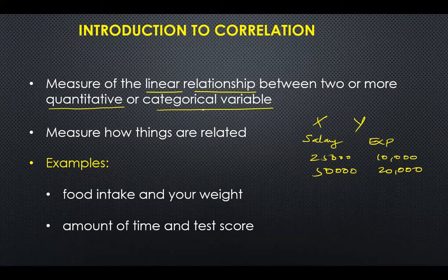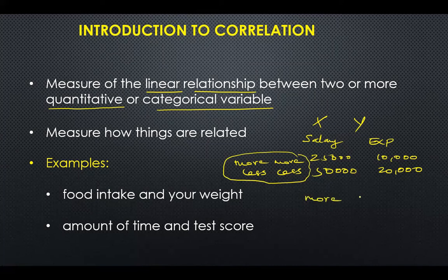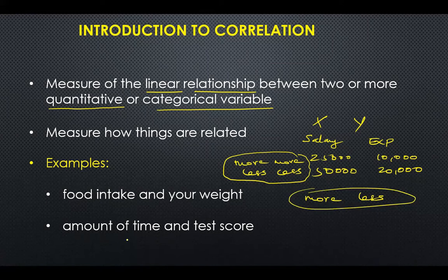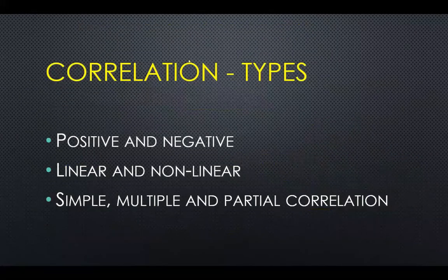Another example: food intake and your weight. Whenever you take more food, you have more weight; less food means less weight. That is a direct relationship. Conversely, more food and less weight would be an indirect relationship. Similarly, more time studying leads to more marks — that is also correlation.